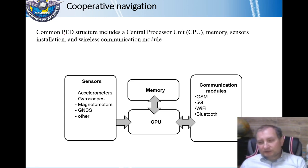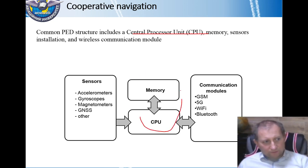The common personal electronic device includes CPU, memory, sensors, sensor installation, and some wireless communication module. This is the main scheme of typical PED equipment. CPU and memory is the core of any PED. Then we have sensors and we can use different types of sensors inside of each PED: accelerometers, gyroscopes, magnetometers, and GNSS receiver as well.